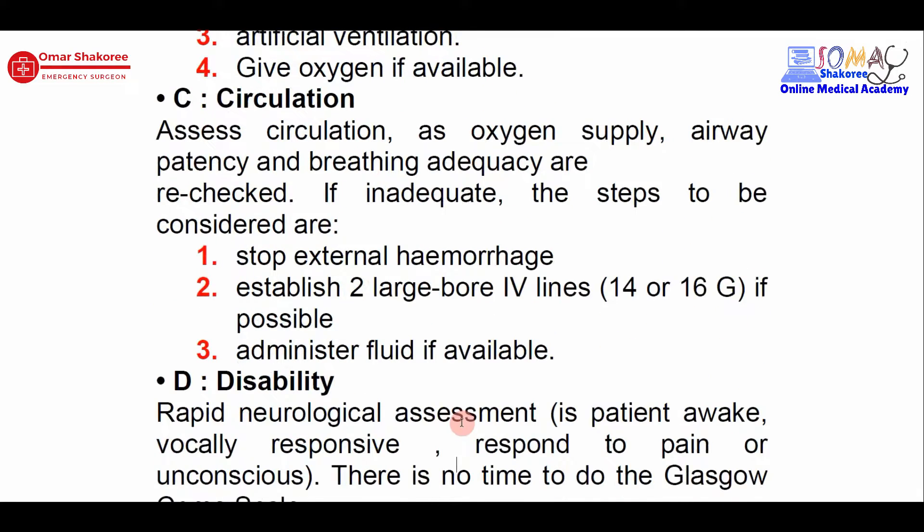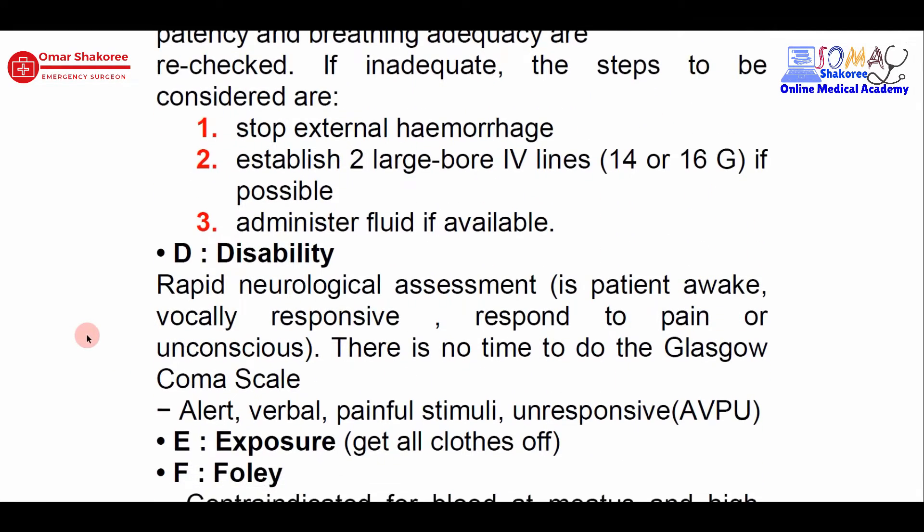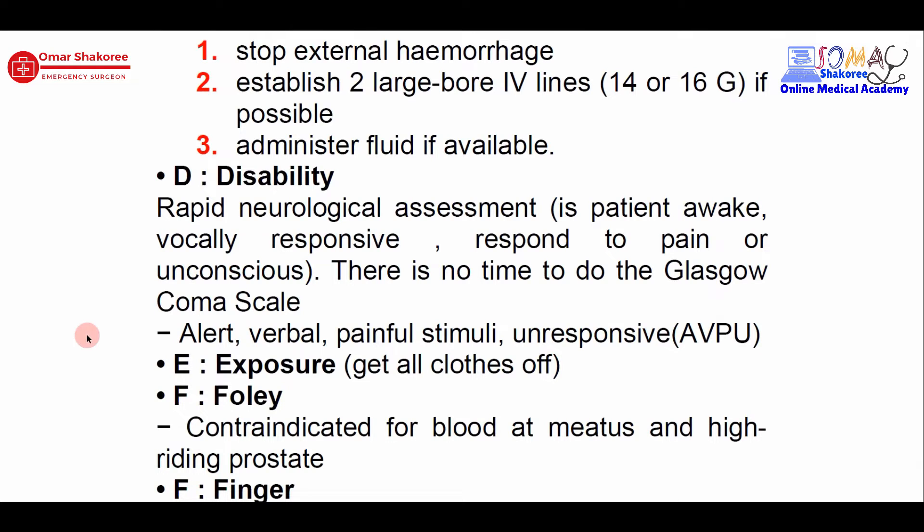We then move to D for disability. Here we have to check the AVPU of that patient. AVPU means: is the patient Alert, responds to Voice, responds to Pain only, or Unresponsive? There is no time to do Glasgow Coma Scale in the primary survey — we just do AVPU to determine whether the patient is alert, unresponsive, or responds to voice or pain only.